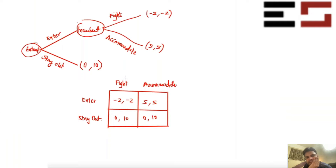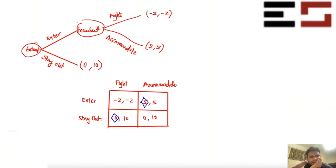If player two decides to fight, then stay out is the best response for player one. If player two decides to accommodate, then enter is the best decision for player one. Now for player two: if player one decides to enter, then accommodate is the best action because 5 is greater than minus 2. If player one decides to stay out, then both fight and accommodate are best responses.